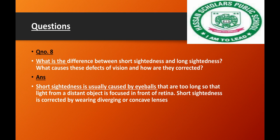Short-sightedness is usually caused by eyeballs that are too long, so light from a distant object is focused in front of the retina. Short-sightedness is corrected by using diverging or concave lenses.